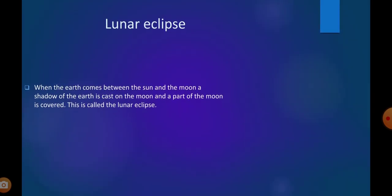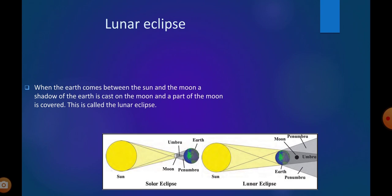Lunar eclipse. That is the next one. When the earth comes between the sun and the moon, a shadow of the earth is cast on the moon and a part of the moon is covered. This is called lunar eclipse. That is in case of lunar eclipse, earth is in the middle and sun and moon on both sides. So when earth comes between the sun and the moon, shadow of earth is casting on the moon. That is about lunar eclipse.